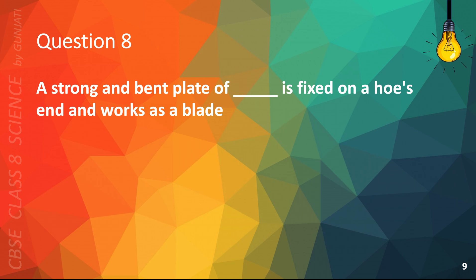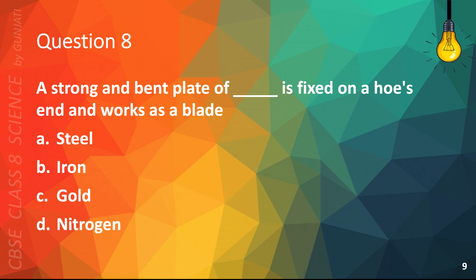Question 8. A strong and bent plate of blank is fixed on a hoe's end and works as a blade. A. Steel, B. Iron, C. Gold, or D. Nitrogen. The correct answer is B. Iron.